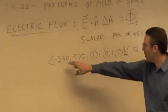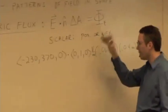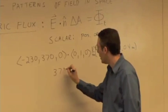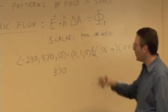So we have negative 230 times 0 gives us 0, plus 370 times 1 gives us 370, plus 0 times 0 gives us 0.